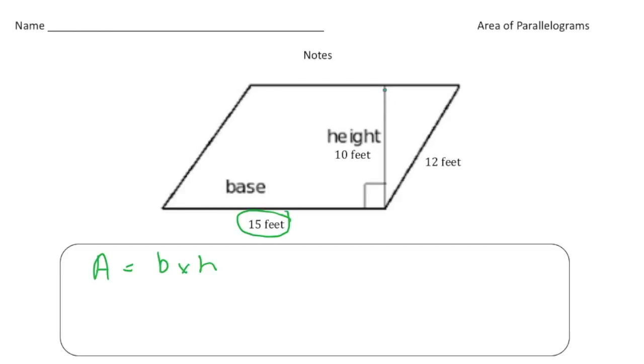And the height always makes a right angle with the base. Notice this measurement is 10. So the 12 we're not going to use. The height is 10, so when I fill this in, area is going to be 15 times 10, which is 150. So area is going to be 150 square feet.